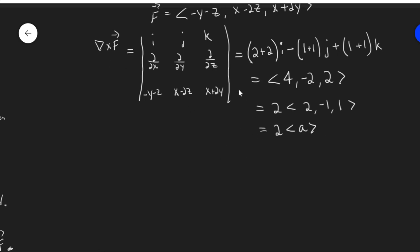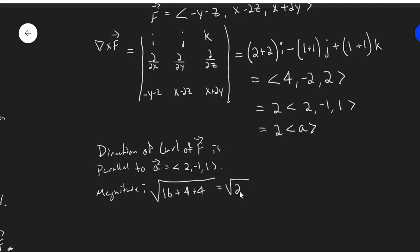So, giving the direction...I mean, we've worked out the curl, that's great. So direction of the curl is in the direction of the axis of rotation a. So direction of curl of f is parallel to a, 2 minus 1, 1, the direction of the curl. And magnitude, we can work out, will be square root of what? 16 plus 4 plus 4, 24, square root of 24, is the magnitude of the curl.